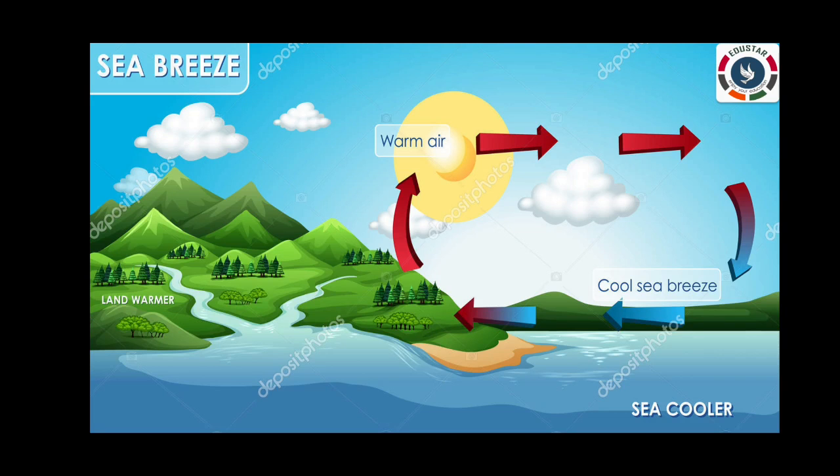This difference gives rise to sea breeze and land breeze. Let us learn how. Sea breeze: During the day, land gets heated up much faster than the water in the sea. As the land becomes hot, it heats the air above it. This hot air rises up and cool air from the sea blows towards the land to take its place. This wind that blows from the sea towards the land during the day is called sea breeze.